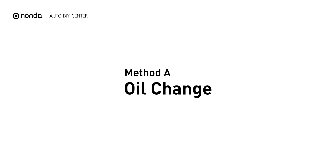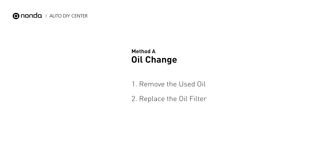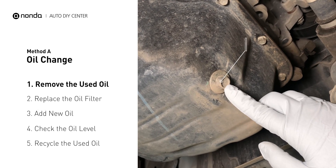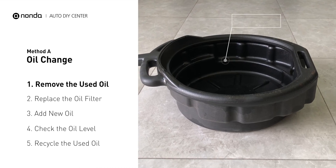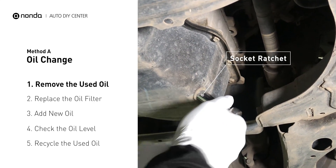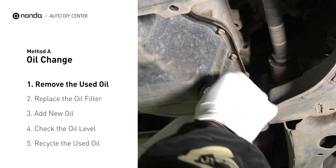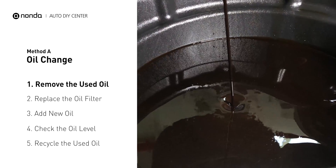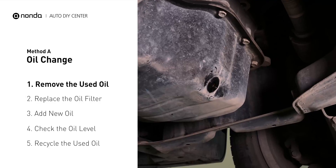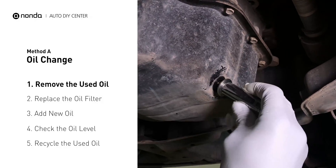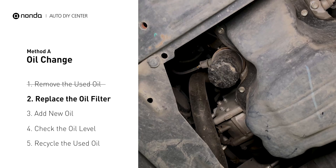Method A: Oil Change. Locate the oil drain plug on your vehicle and place an oil collection pan underneath it. Use a socket ratchet to remove the plug from the oil pan. Once the plug is removed, the oil should start flowing out into your collection pan. Once all the oil is drained, replace the drain plug and tighten it back.